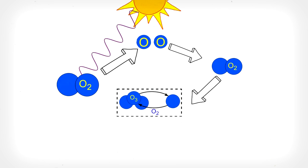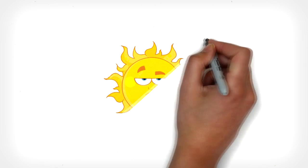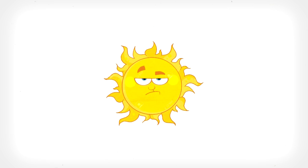Stratospheric ozone has been called good ozone because it protects Earth's surface from dangerous ultraviolet light.